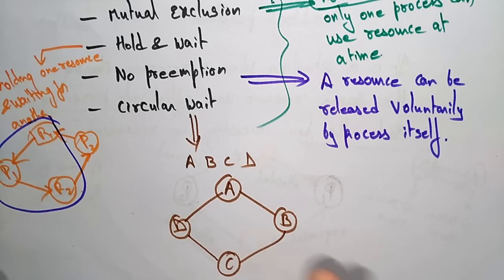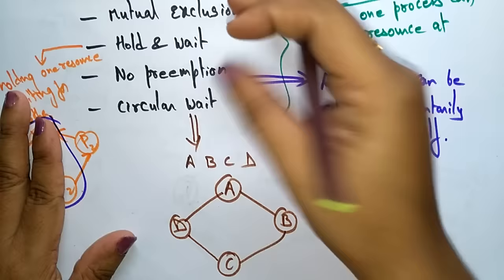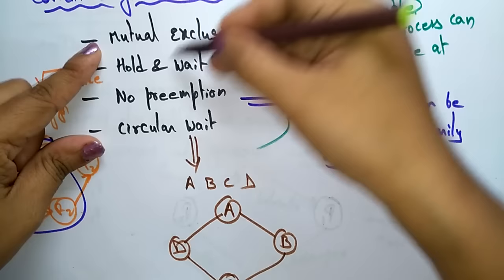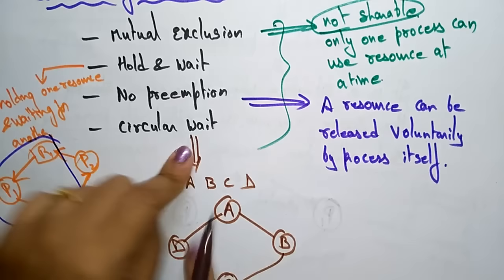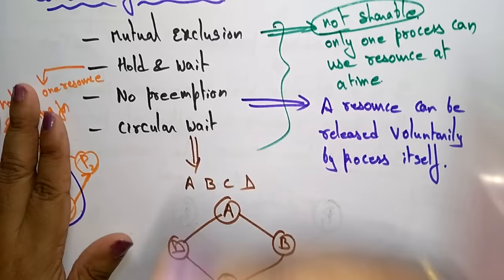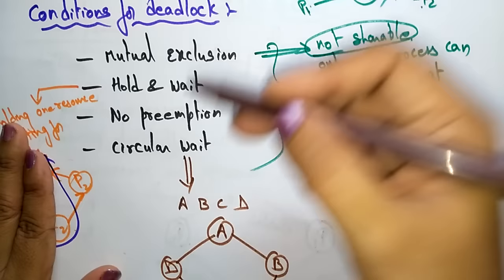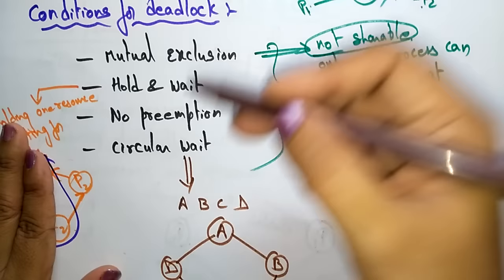If we prevent any one of these conditions — making it false — we can prevent a deadlock. We can avoid mutual exclusion by sharing resources, make hold and wait false, apply preemption instead of no preemption, and avoid circular loops. The four main conditions leading to deadlock are: mutual exclusion, hold and wait, no preemption, and circular wait. If any or all of these are present, it leads to a deadlock.